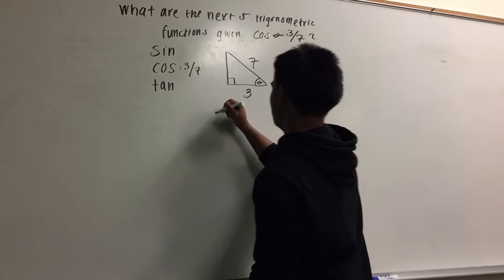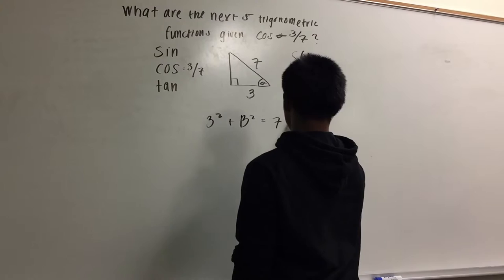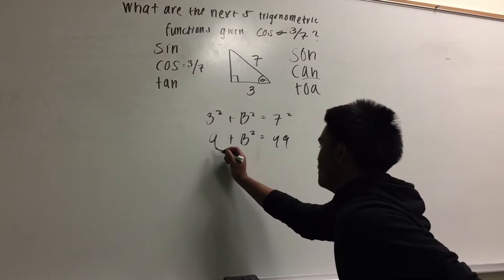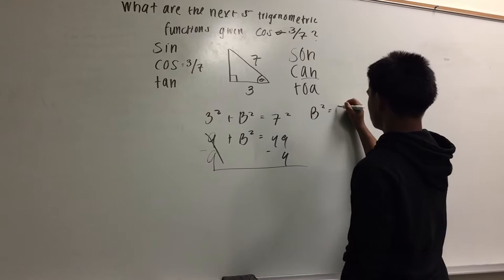Now, to find the missing side, we do the Pythagorean theorem. Which is, 3 squared plus B squared equals 7 squared. Which simplifies to 9 plus B squared equals 49. Now, we minus 9 from both sides. So, B squared equals 40.